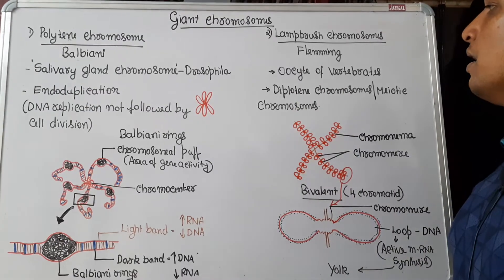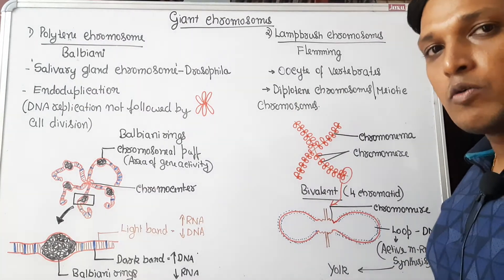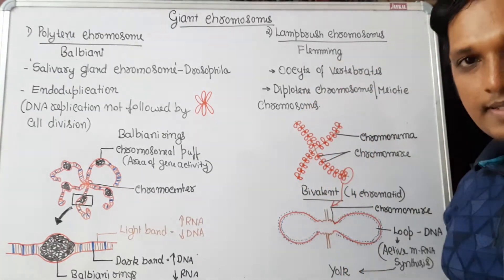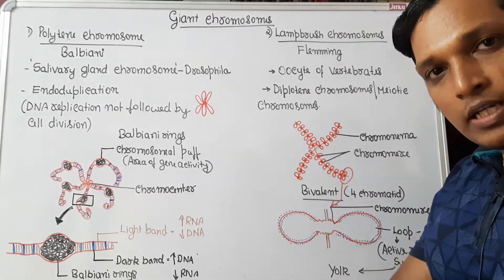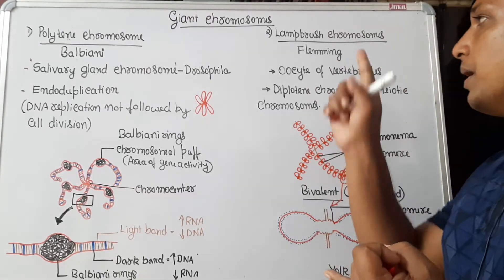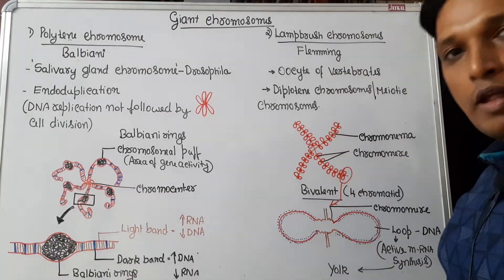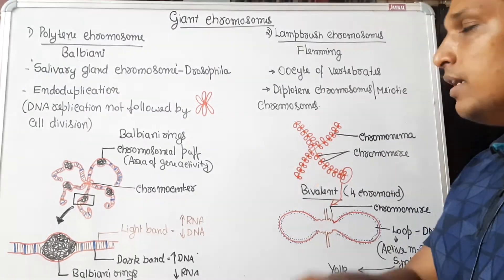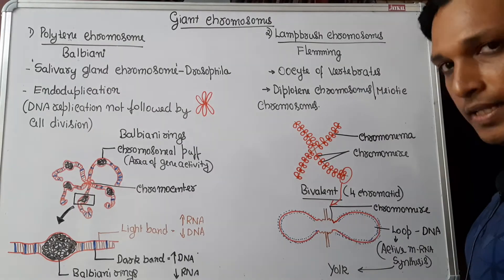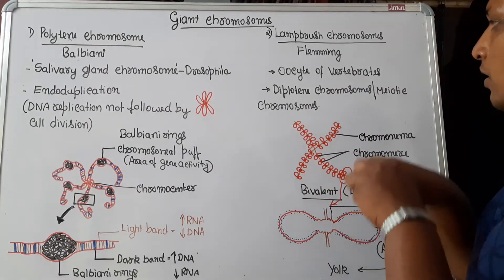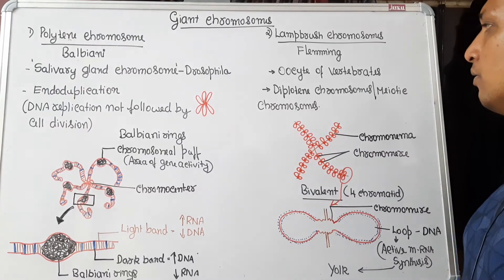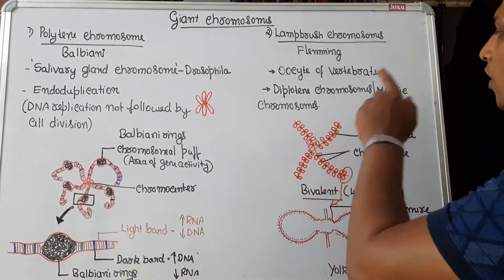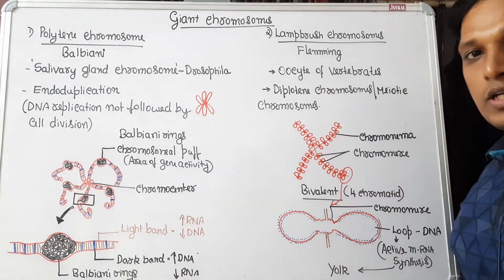Lampbrush chromosome was discovered by Fleming. It is found in the oocyte of vertebrates. It was first observed in the oocyte of amphibia by Fleming. It is also found in sharks and reptiles — in various vertebrates. The other name of lampbrush chromosome is diplotene chromosome or meiotic chromosome.